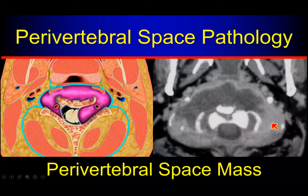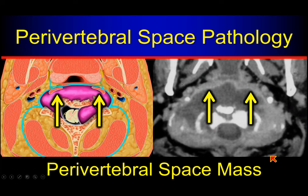If I have a generic lesion of the perivertebral space, I find the longus coli or capitis musculature and I see how it's lifted away from the vertebral bodies, helping me guess that this lesion is arising from the perivertebral space and not the retropharyngeal space.